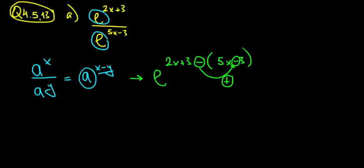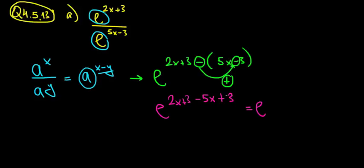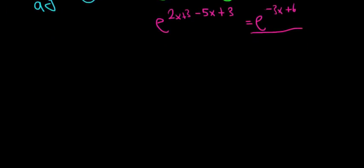Let's finish Part A. That gives us e to the power of 2x plus 3 minus 5x, and then minus minus makes a plus 3. Simplifying: 2x minus 5x is minus 3x, and 3 plus 3 is plus 6. So the answer is e to the power of minus 3x plus 6.